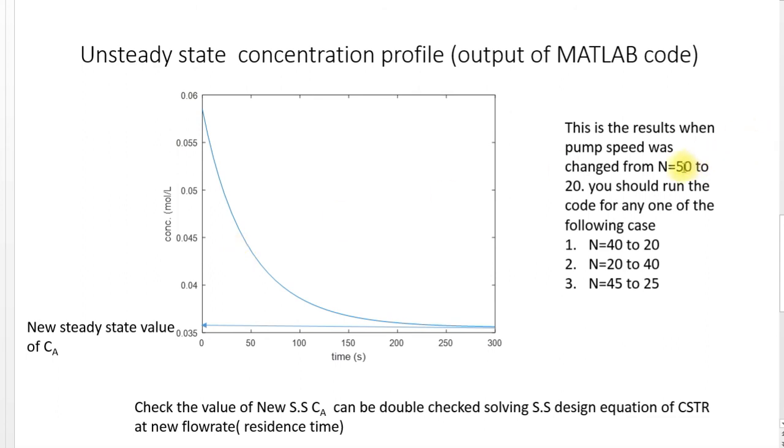Here I have run it for from speed from 50 to 20. You can change, you can run for 40 to 20 or 20 to 40 or take any two values. Hope it's clear. Thank you.